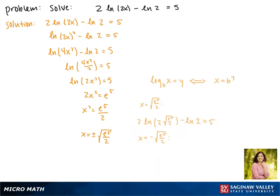Plugging in our other solution gives us 2 times the natural log of 2 times the negative square root of e to the fifth over 2, minus the natural log of 2 equals 5. What's inside our natural log will give us a negative because this is a positive times a negative, so it is an extraneous solution. This means that the solution to our equation is the square root of e to the fifth over 2.